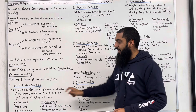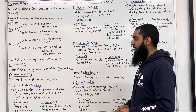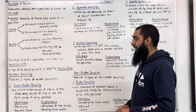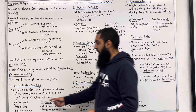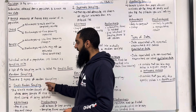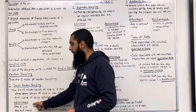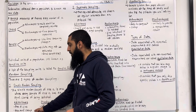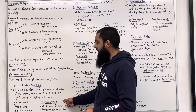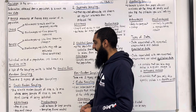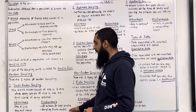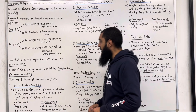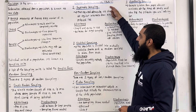A simple random sample of size N is one where every sample of size N has an equal chance of being selected. The advantages of using simple random sampling are: number one, free of bias; number two, easy and cheap. The disadvantages are: number one, not suitable for large samples; number two, a sampling frame is needed.